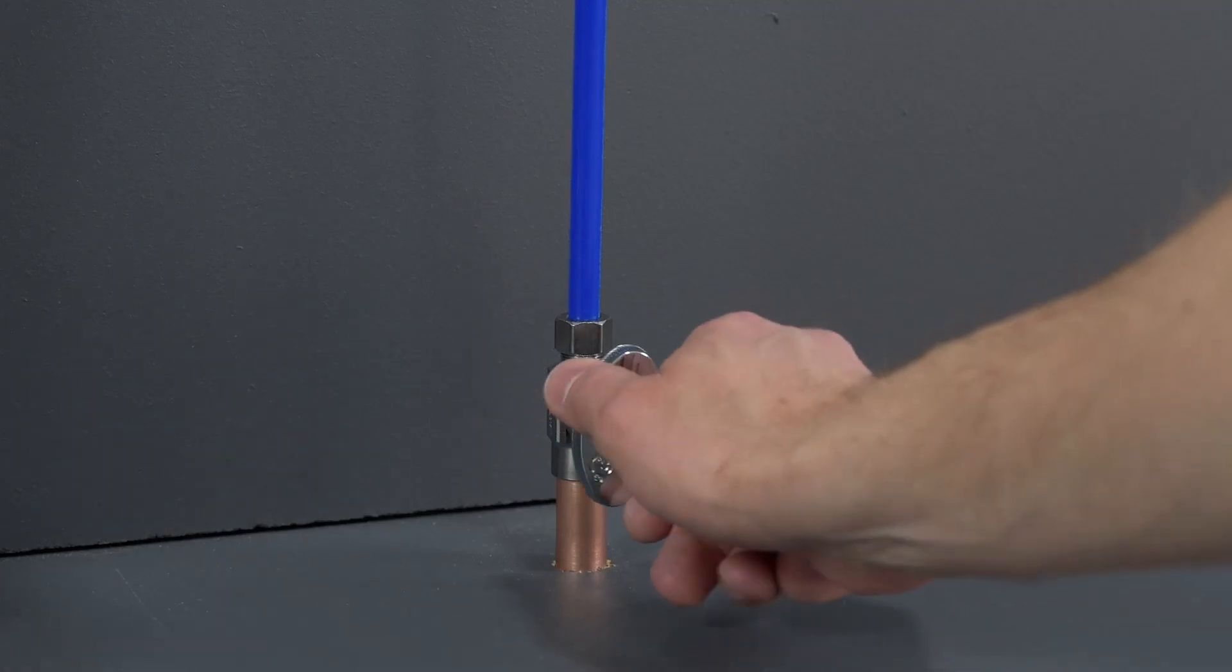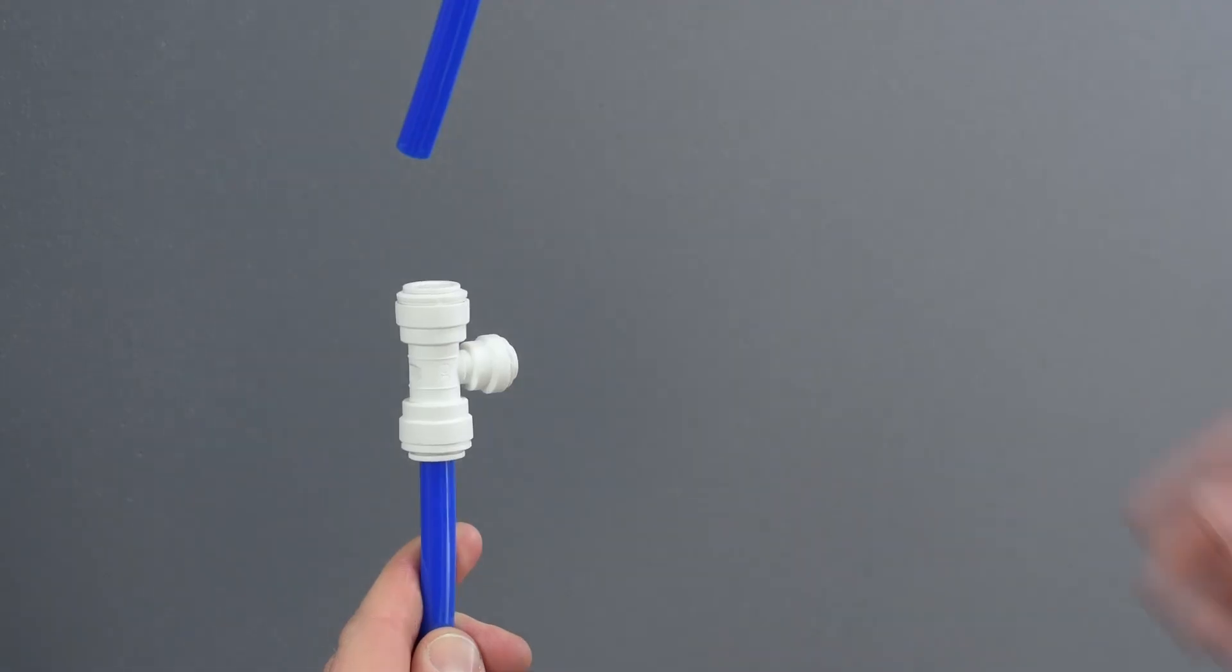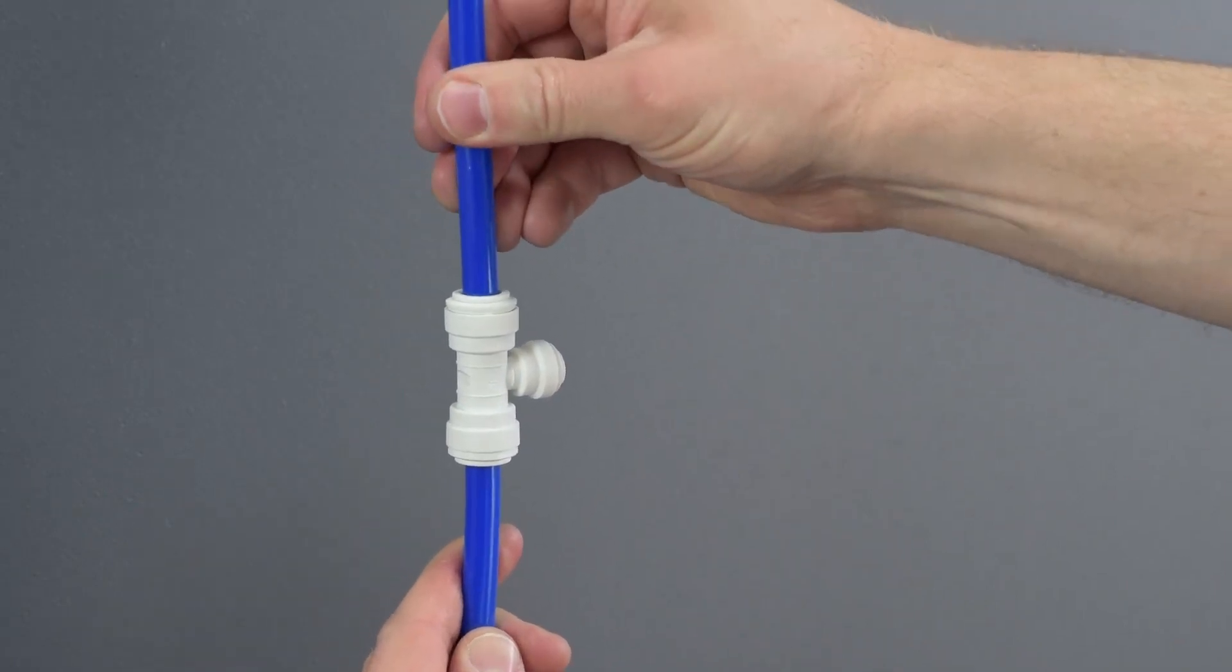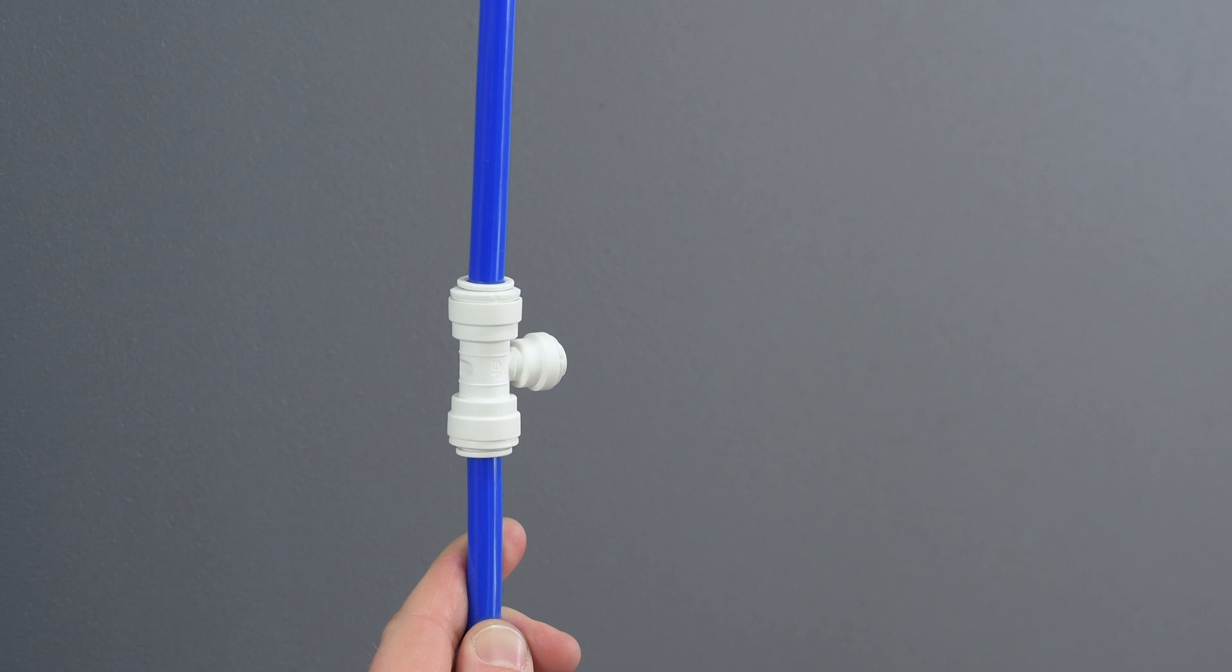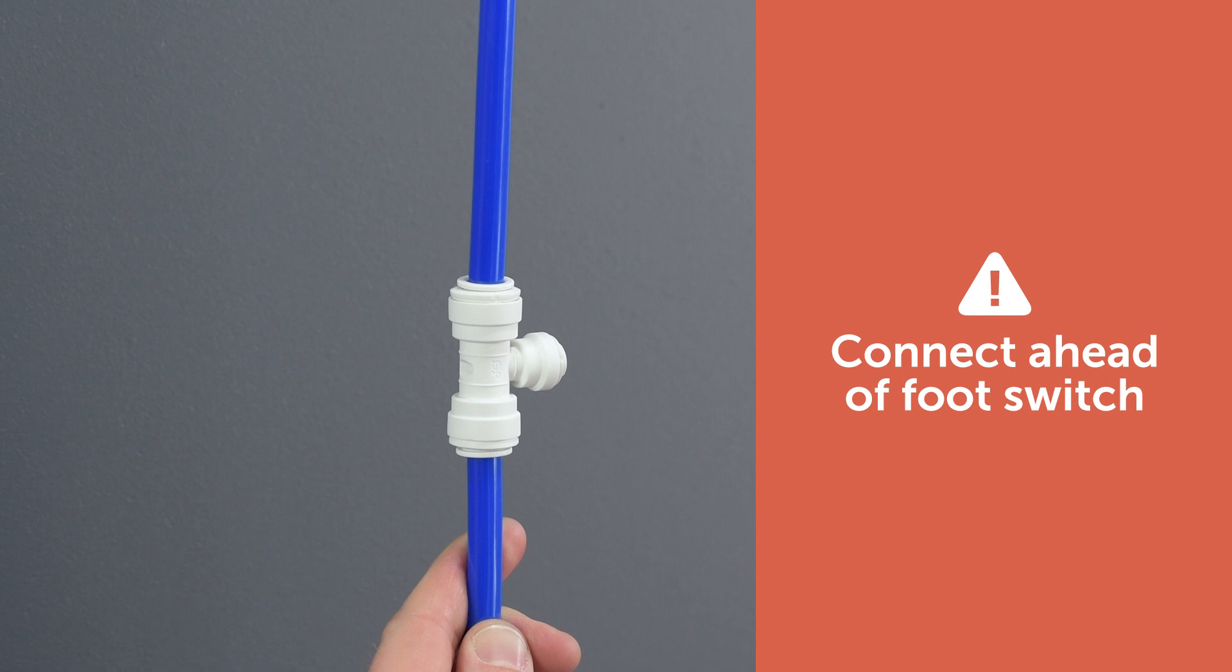First, turn off the water supply. Tap the cold water line with a T, valve, or compression valve so the quarter inch polyurethane tubing can be connected. Be sure to connect to the cold water supply ahead of any foot switch that might be present for uninterrupted water supply.